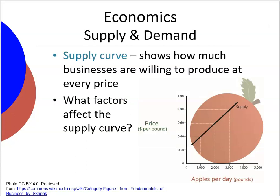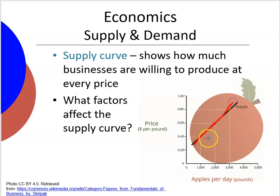Now let's look at the supply curve. This doesn't tell us how much people are actually going to make — we're looking at this from the viewpoint of the business: how much am I willing to make? If I can sell at 40 cents, I'm willing to make 1,000 pounds. At 60 cents, I'll make 2,000. At 80 cents a pound, I'll crank them out — 3,000 pounds. The higher the price, the more I'm willing to make, so this curve slopes upward.